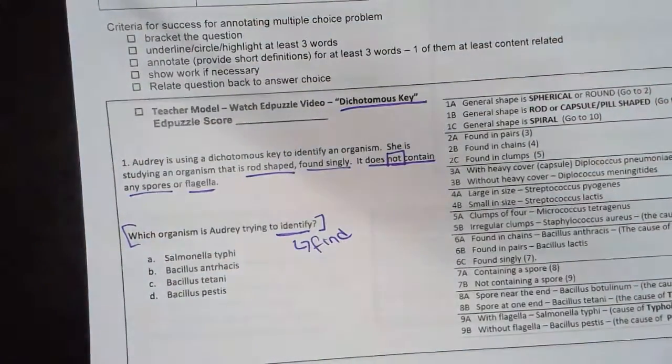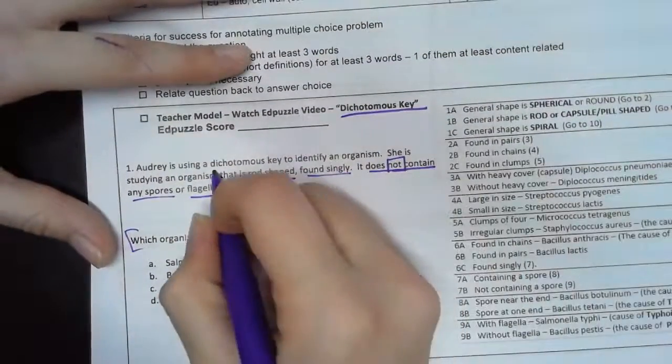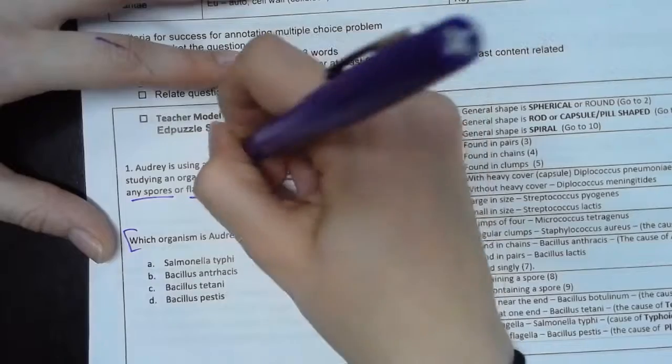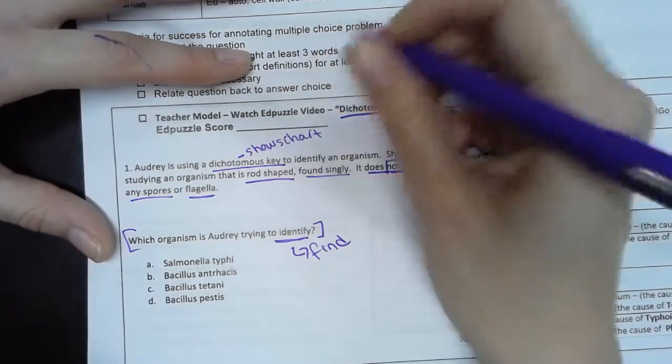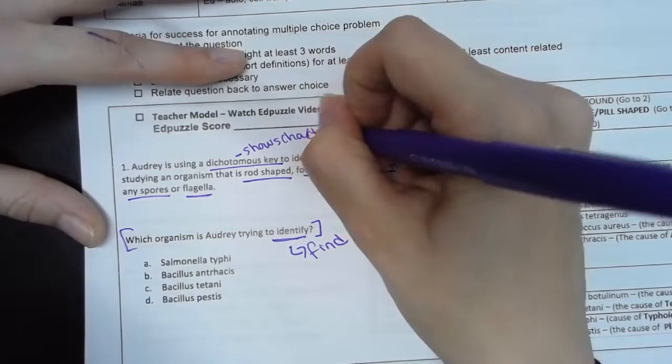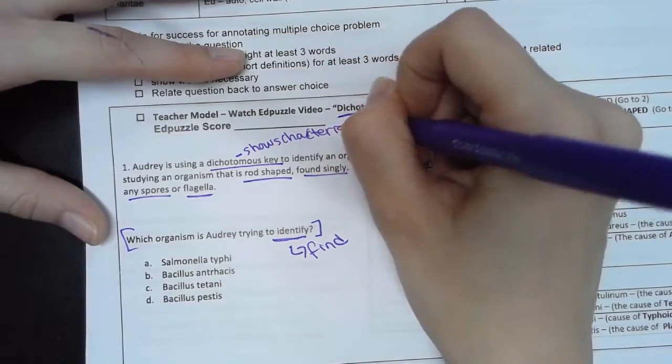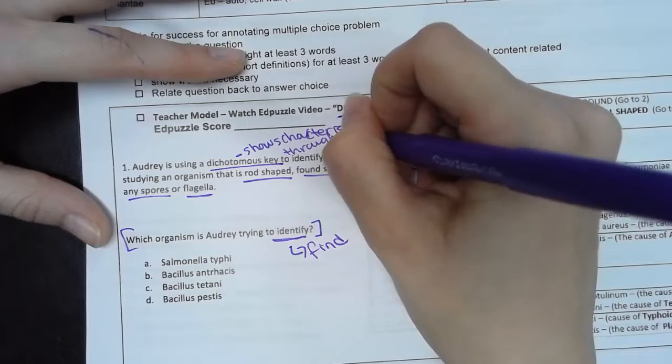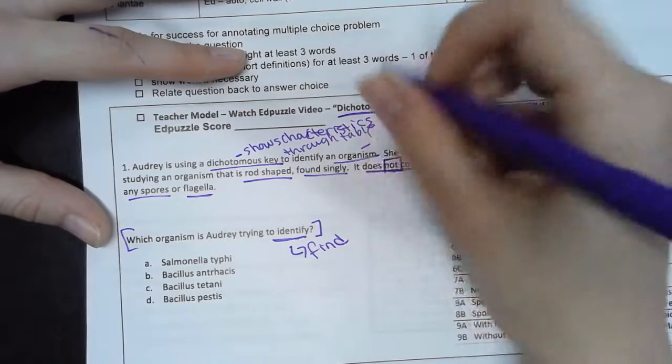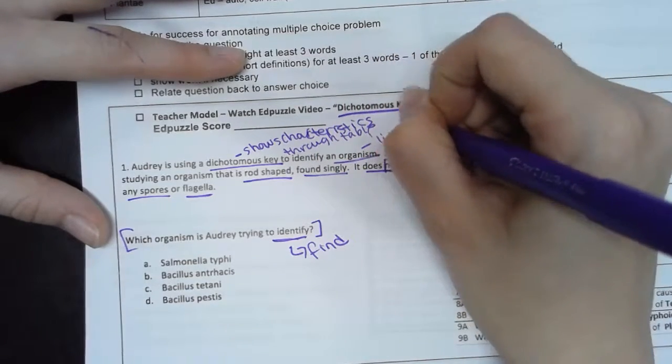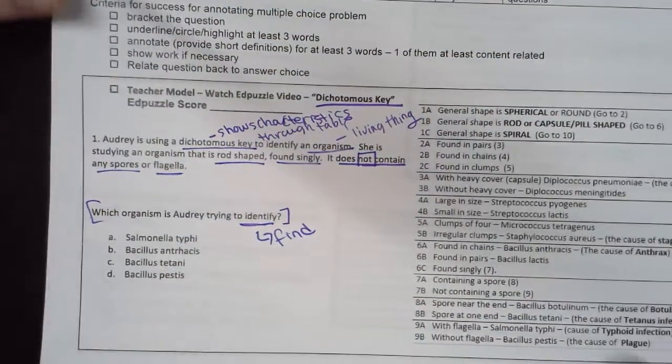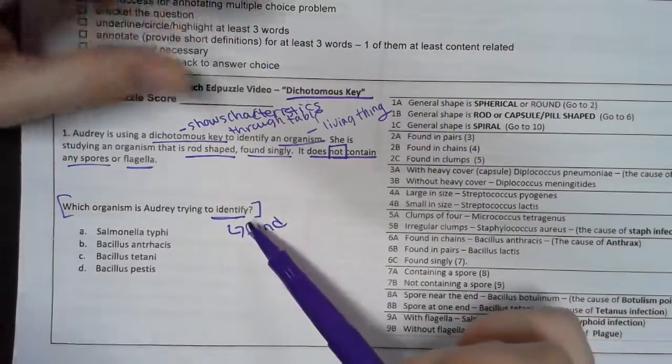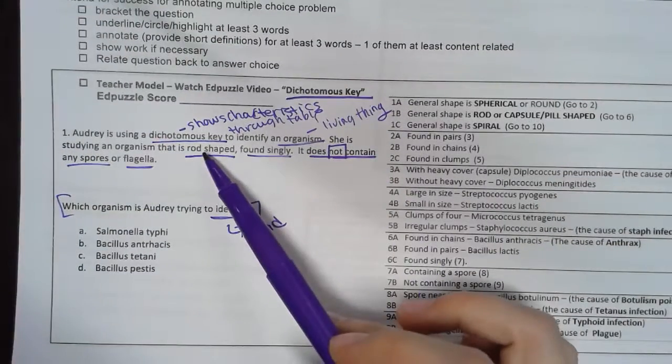If you're looking for words to underline, also dichotomous key - I would write 'shows characteristics through a table.' An organism is a living thing, so if you're like 'oh there's nothing to annotate in this mess,' actually there is. Okay, so what are we trying to identify? Well, first thing I'm going to find one of the characteristics.